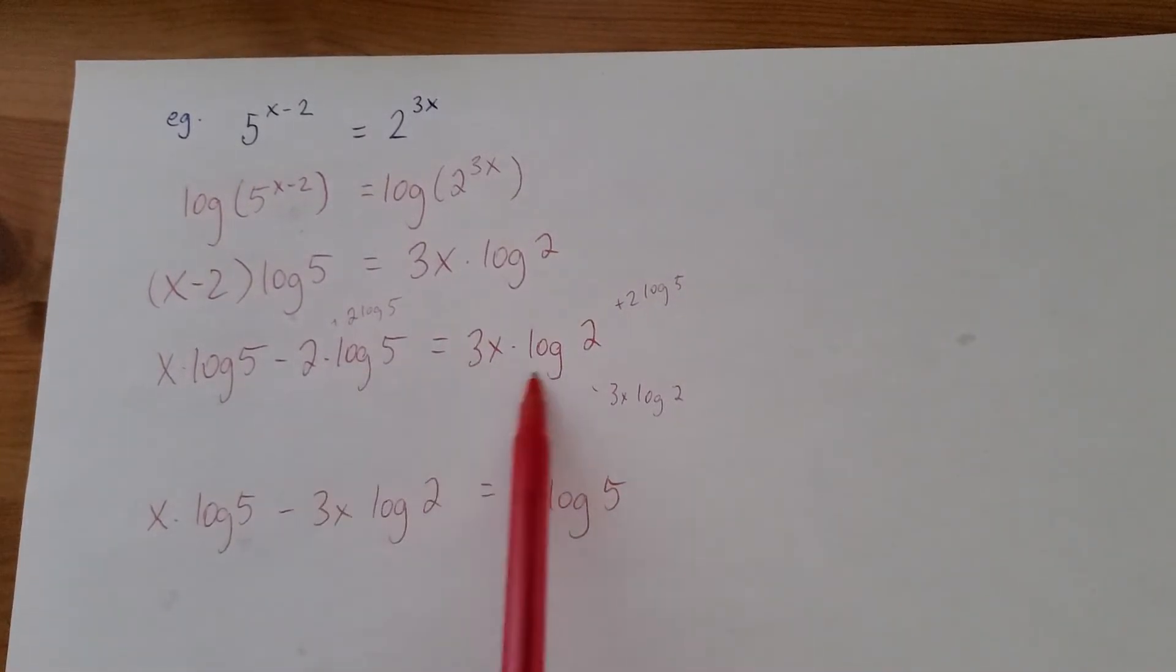We'll get x log 5 minus 3x log 2 equals 2 log 5. Basically, I just swapped these two. I had to add, subtract, and that looks okay.